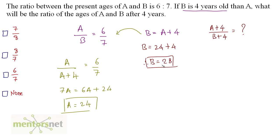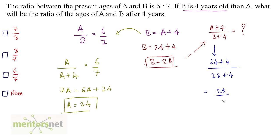We have A's value and B's value. Putting these values into the equation to get the ratio of their ages after 4 years: A plus 4 is 24 plus 4, and B plus 4 is 28 plus 4, giving us 28 by 32. Dividing by 4, we get 7 by 8. Therefore the ratio is 7 by 8, so the answer is option A.